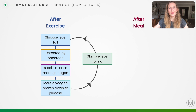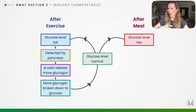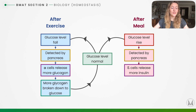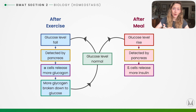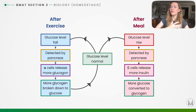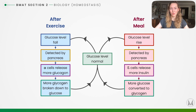After we eat a meal we get a sudden increase in glucose levels. The pancreas detects that increase and the beta cells in the islets of Langerhans release more insulin. That insulin converts the excess glucose into glycogen to be stored, reducing blood glucose levels back to normal. This is an example of homeostasis maintaining that constant body environment.